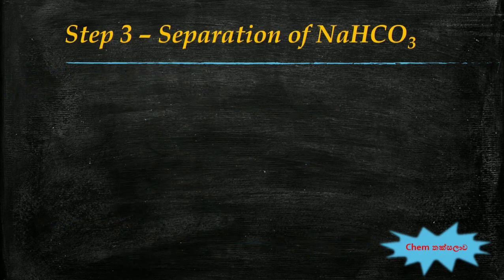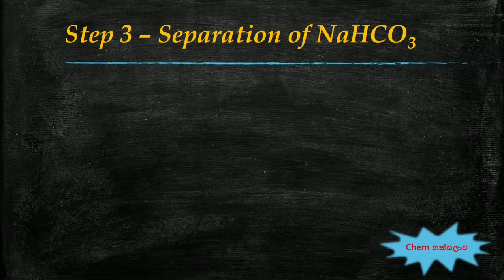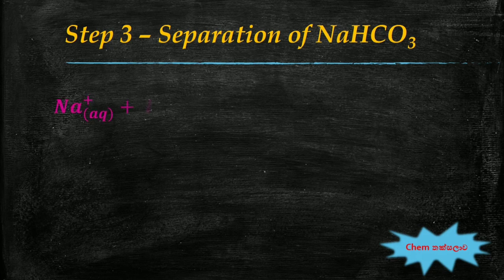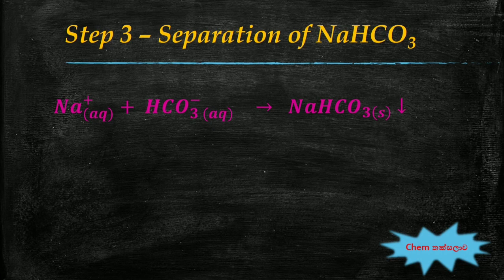In this step, sodium bicarbonate is separated. As the ammonified brine solution is carbonated, the concentration of ammonium bicarbonate in the solution increases. Since the brine has a high concentration of sodium⁺ ions, sodium bicarbonate crystallizes and separates out from the solution when the concentrations of sodium⁺ and bicarbonate ions exceed the saturation limit of sodium bicarbonate. The formed solid sodium bicarbonate is then removed from the solution.